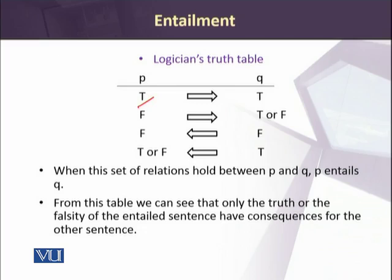If Q is true, then P can be true or false, because the relationship of entailment is conditioned by the first sentence. The first sentence is the one which entails the second one. If the second one is false, the first one would also be false. But if the second one is true, the first can be true or false, because entailment arises with the substance of the first sentence, not the second. When this set of relationships holds between P and Q, P entails Q. From this table we can see that only the truth or falsity of the entailed sentence has consequence for the other sentence.